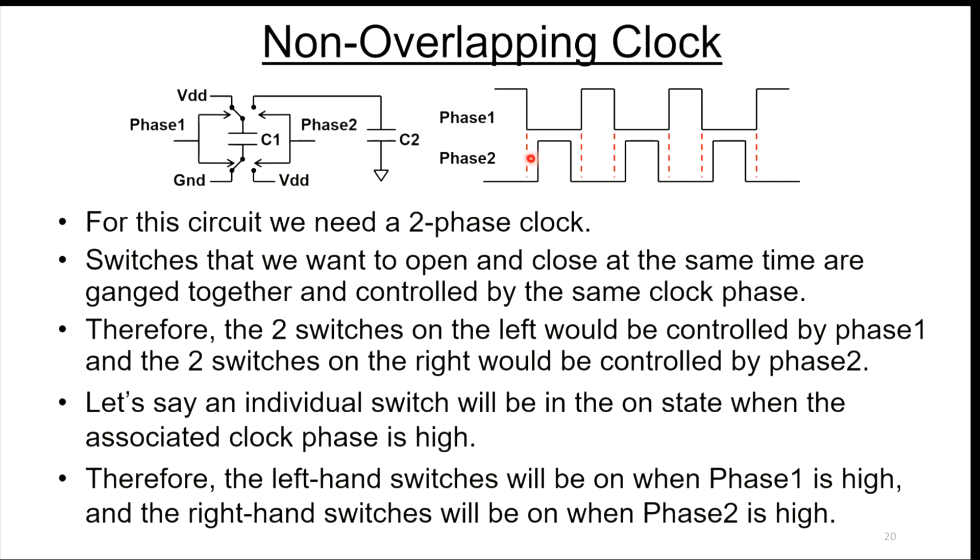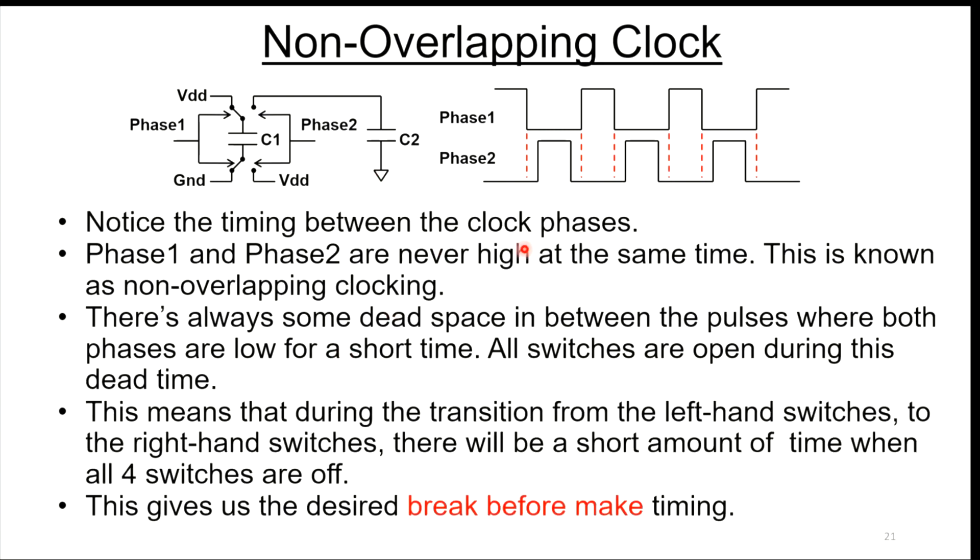This is what the phases would look like. You can see there's a dead zone in between here where both switches are off. Phase one and phase two are both zero. When we transition from charging the cap to discharging the cap into C2, there's going to be a small time lag. The timing between the clock phases, phase one and phase two, they're never high at the same time. This is known as non-overlapping clock. There's a dead space. This gives us that break before make timing that we were looking for.